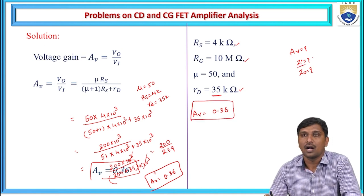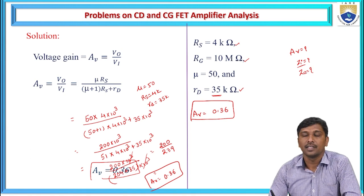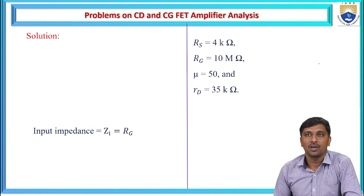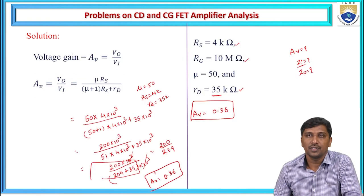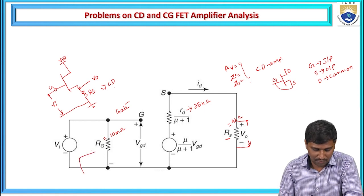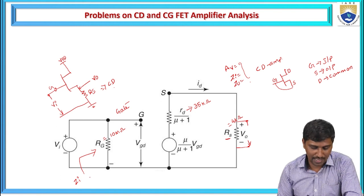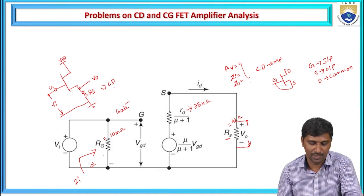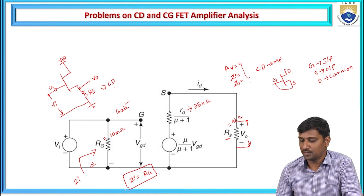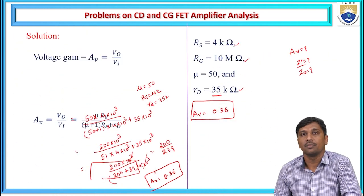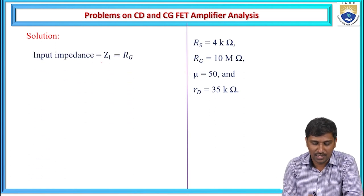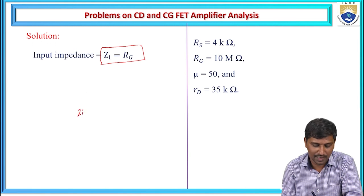Now we calculate the input impedance. From the circuit, Zi is directly proportional to the given input bias resistance across the gate terminal. Therefore, Zi equals RG, which is 10 mega ohms.